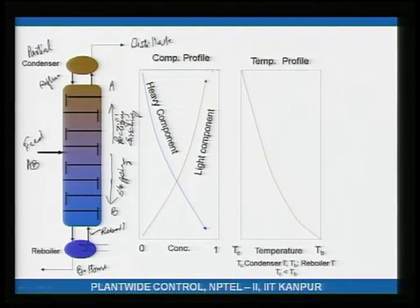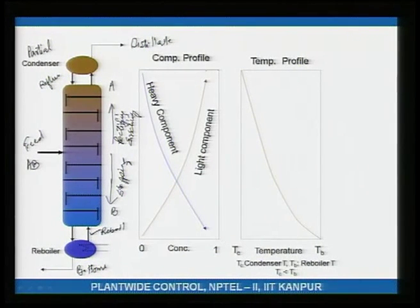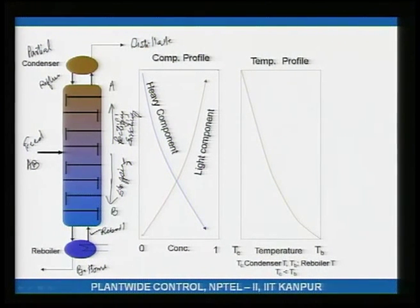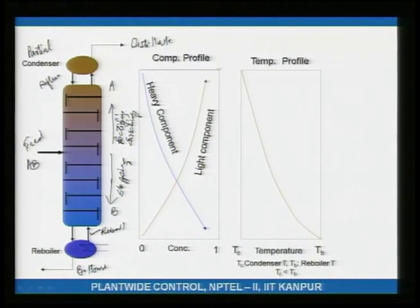Looking at the composition profile: at the top of the column, the heavy component composition is very small and the light component is close to 1. As you go down toward the bottom, the light component decreases and the heavy component approaches 1 — nearly pure B at the bottoms and nearly pure A at the top.